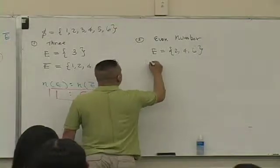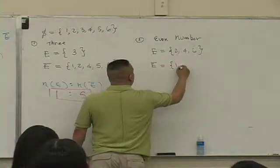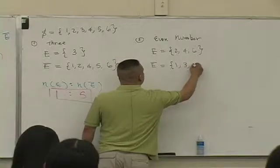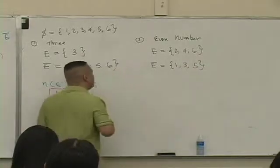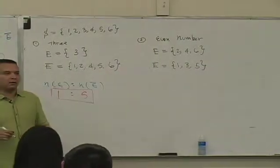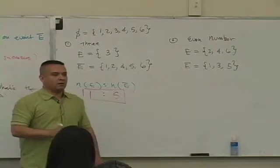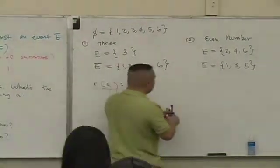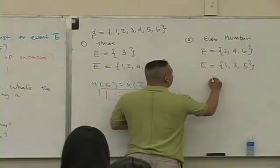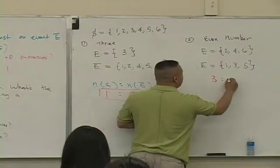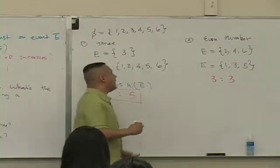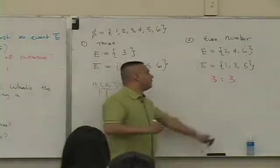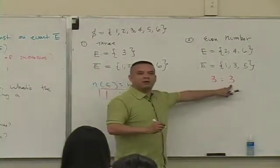What's the complement of that event? One, three, and five. Good. How many outcomes are in E? Three. How many are in the complement of E? Three. So you can say the odds for rolling an even number is three to three.